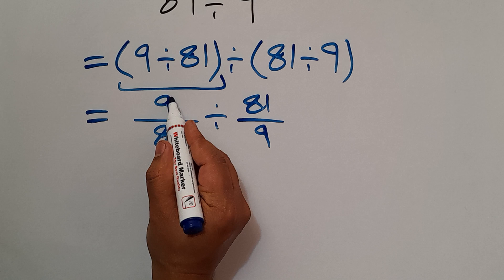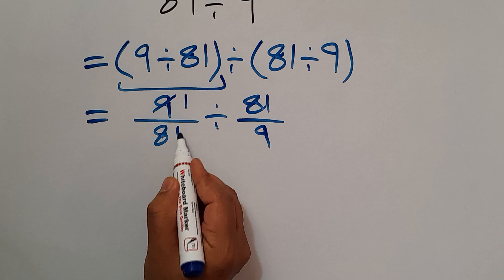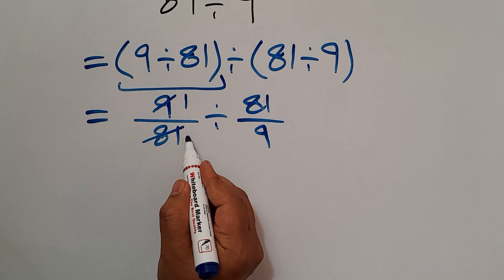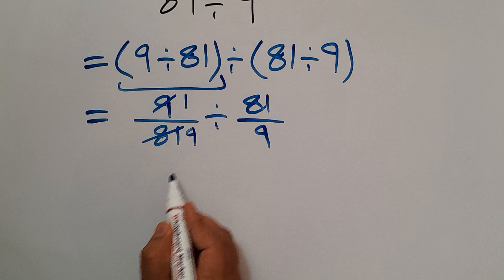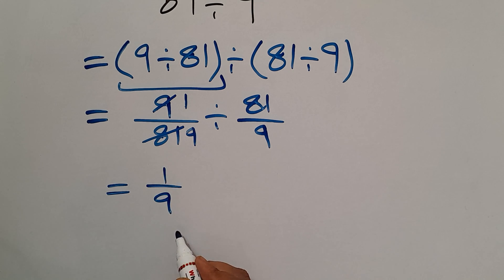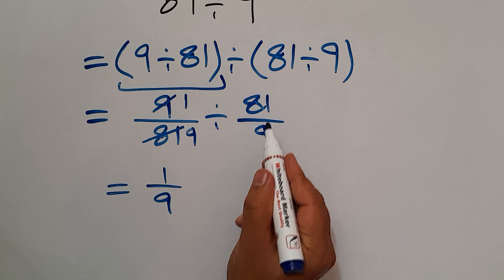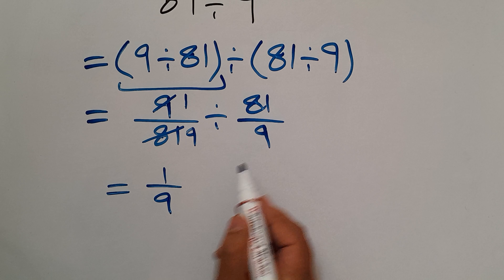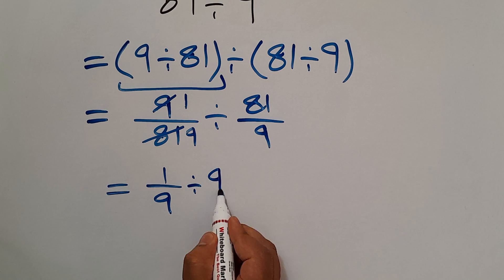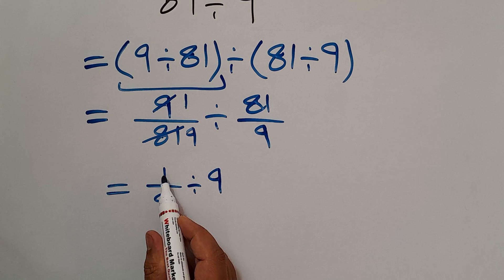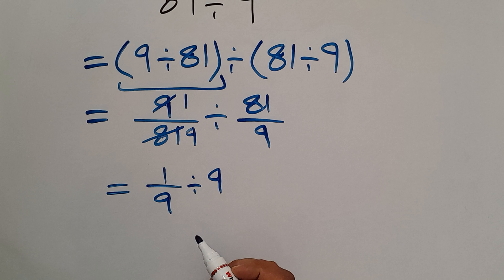9 divided by 9 gives us 1 and 81 divided by 9 equals 9, so we have 1 over 9. And 81 divided by 9 equals just 9, so we have 1 over 9 divided by 9.